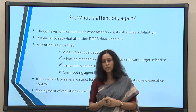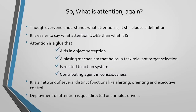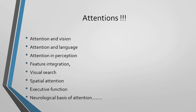Attention is related to the action system and is also a contributing agent to consciousness. In fact, understanding consciousness and its elements is how attention research actually began. Today, attention is understood as a network of several distinct functions like alerting, orienting, and executive control. Its deployment is goal-directed — a top-down mechanism — or stimulus-driven, which is bottom-up. Attention is connected to vision, language, perception, feature integration, visual search, spatial attention, executive function, and neurological connections.